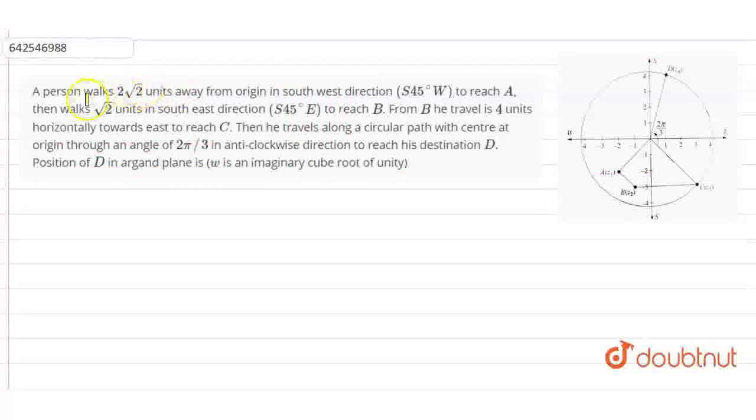So guys, let's start with this question. A person walks 2 root 2 units away from the origin in the southwest direction, S 45 degrees west, to reach A.